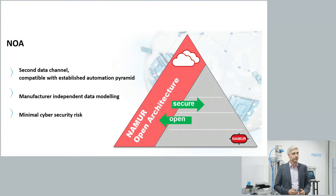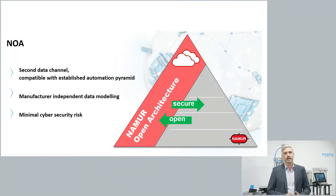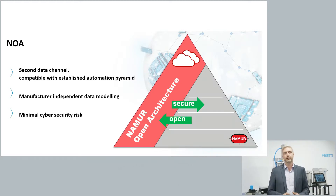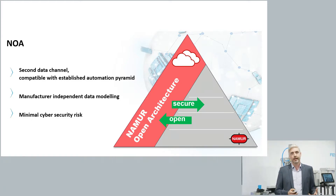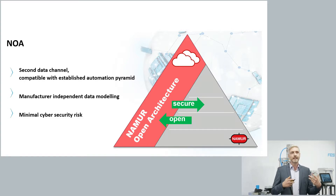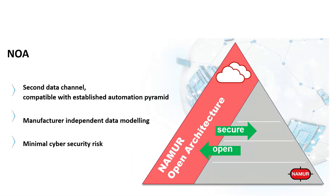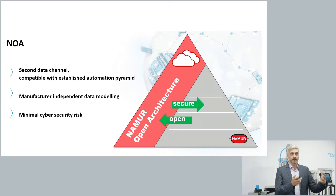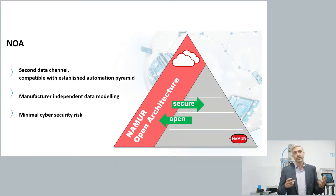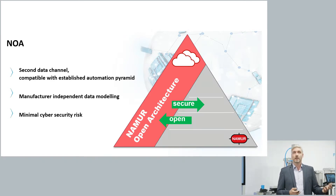Looking at the key aspects of NOA: in the official NAMUR NOA logo you see on the right a gray rectangle representing the established automation pyramid — the core process control. This is then extended with a second channel, the NAMUR Open Architecture domain or NOA domain, where data is computed, transported, and used in optimization applications. The separation of core process control and the data computation domain is a very important aspect of NOA.